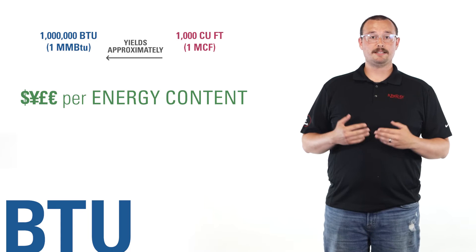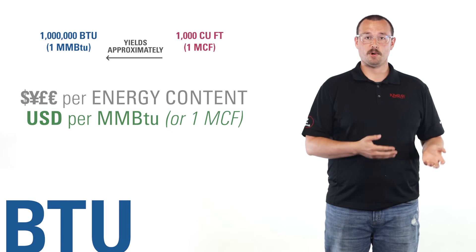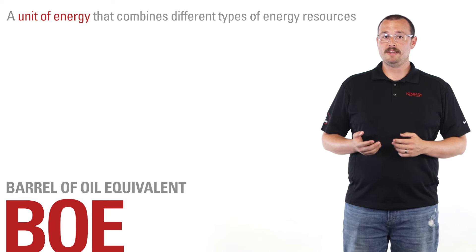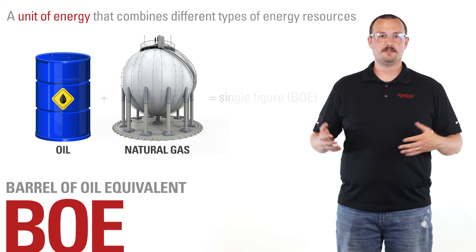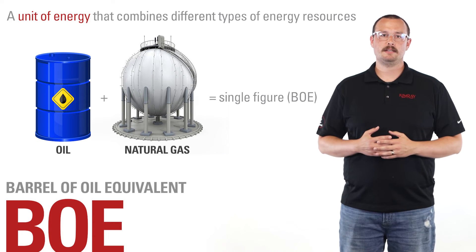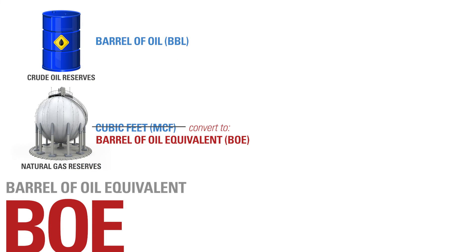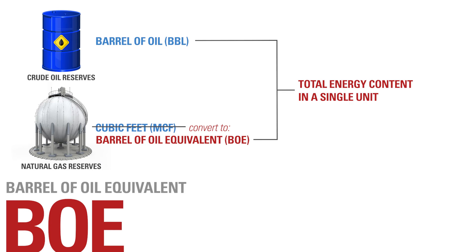The price of natural gas is often expressed in currency units per energy content — for example, US dollars per million BTU. The abbreviation BOE stands for Barrel of Oil Equivalent. It is a unit of energy that combines different types of energy resources like oil and natural gas into a single figure to more easily represent the total amount of energy that a company can access. Converting reserves to a barrel of oil equivalent, or BOE, gives a total energy content in a single unit.